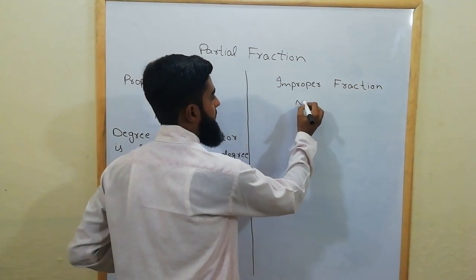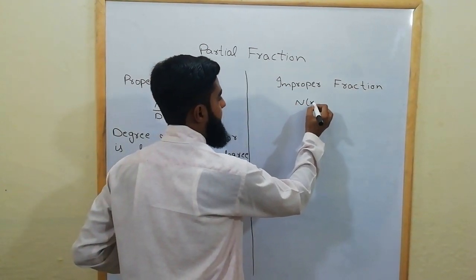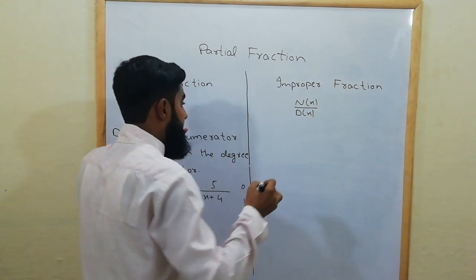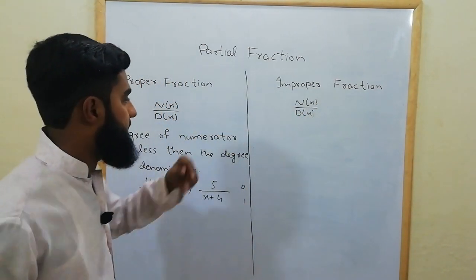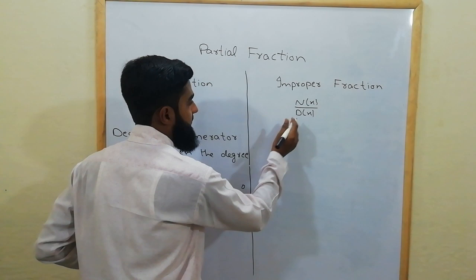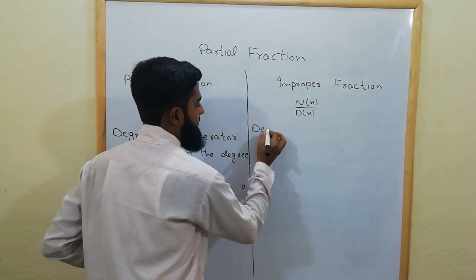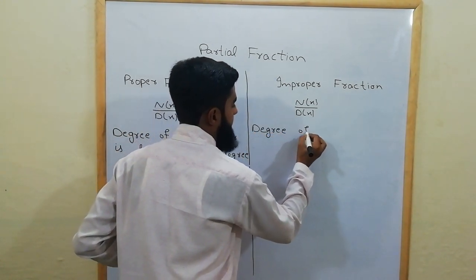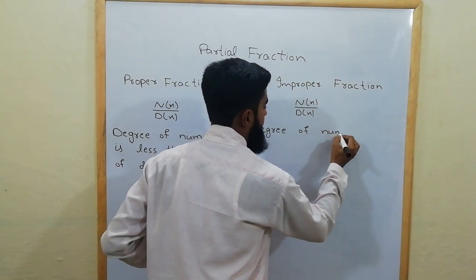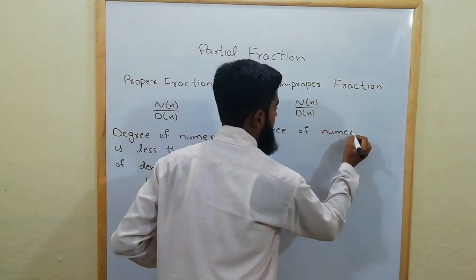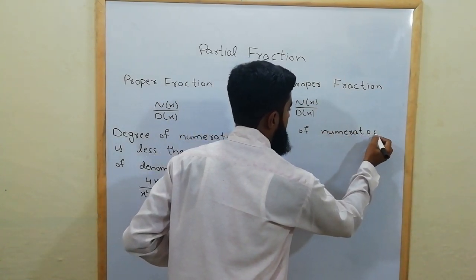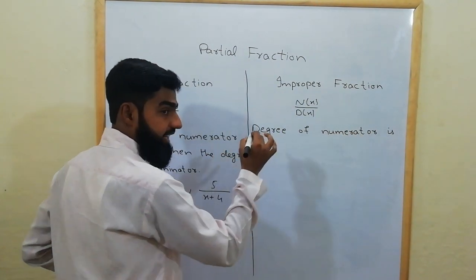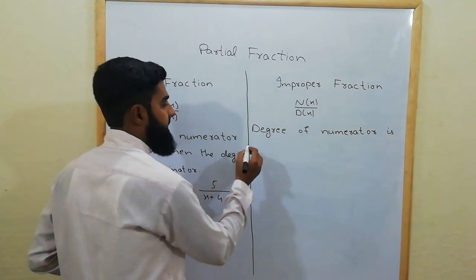Now for an improper fraction: the fraction of the form N(x) over D(x), where N(x) is the numerator and D(x) is the denominator — if the degree of the numerator is greater than or equal to the degree of the denominator, then it is called an improper fraction.